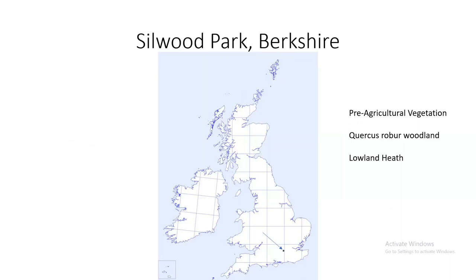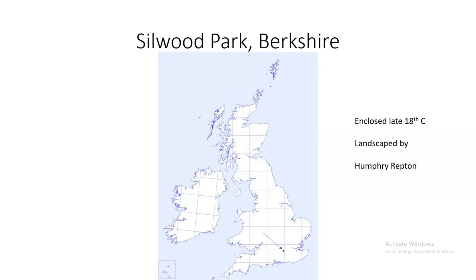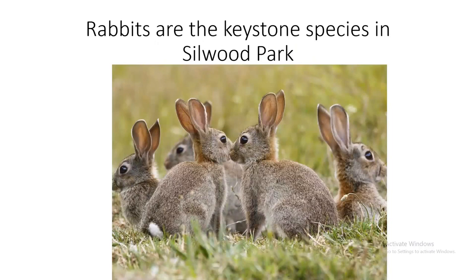Before agriculture, the vegetation was probably a mosaic of Quercus robur woodland and lowland heath, looking quite open with significant herbivore impacts. After 1066, William the Conqueror moved into Windsor right next door to Silwood Park, and from then on Silwood was part of the favored royal hunting forest, which is the main reason the park stays as rural as it does today. The first house was in grounds landscaped by the famous Humphrey Repton.